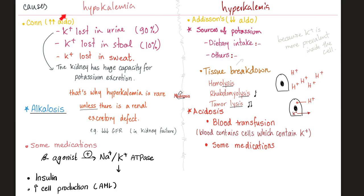Causes of hypokalemia: too much aldosterone wastes potassium in the urine, stool, and sweat. Alkalosis causes hypokalemia by the shift mechanism. Beta-agonists stimulate the sodium-potassium ATPase — hypokalemia. Insulin pushes potassium into the cell, leaving less outside — hypokalemia. Any disease that increases cell production, like cancer, can lead to hypokalemia, because the more cells you build, the more potassium you put inside each cell, leaving less potassium outside. This can also happen during refeeding syndrome.